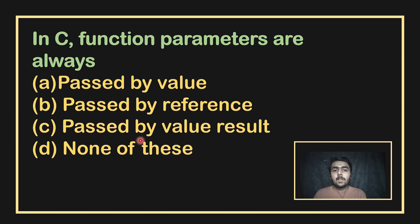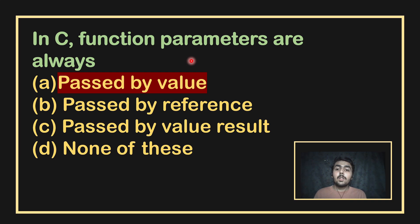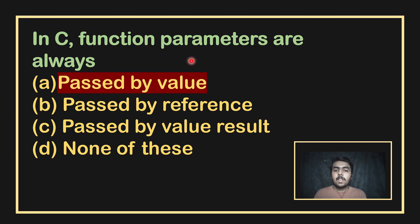The function parameters are always passed in two different ways: call by value and call by reference. However, parameters are always called by value by default. If you want to pass by reference, you have to use the star (pointer) sign. By default, we pass by value.